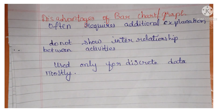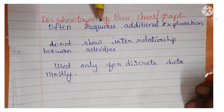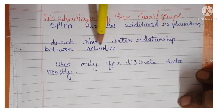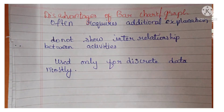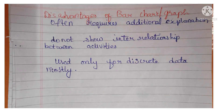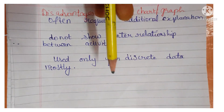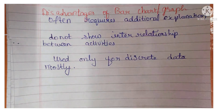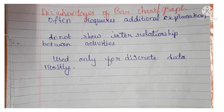Disadvantages: it often requires additional explanation along with the graph; it does not show interrelationship between activities — it just shows a visual representation of the data but does not explain the interrelationship between variables; and it is used mostly only for discrete data. For more on discrete versus continuous data, I have posted a separate video — you can watch our channel playlist for statistics.